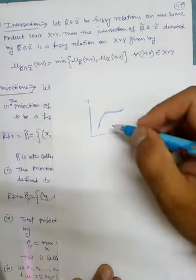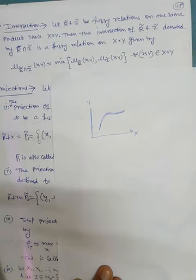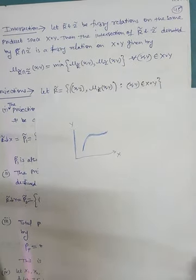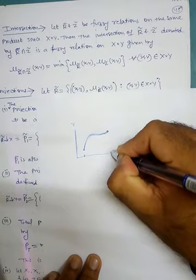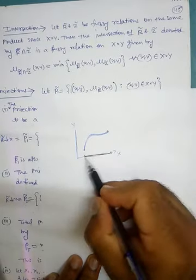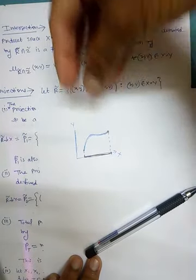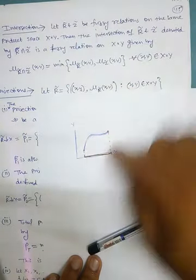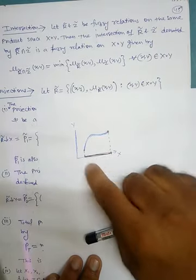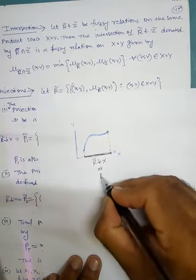Now if you want to find out the projection in the X direction, basically what we get is this interval on the X axis. Suppose we have a torch here and we shine it in this direction — we are getting its image on the X axis, this interval. This is basically the projection of this on X, denoted by P1.